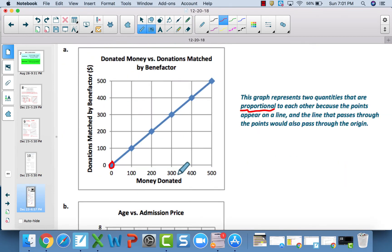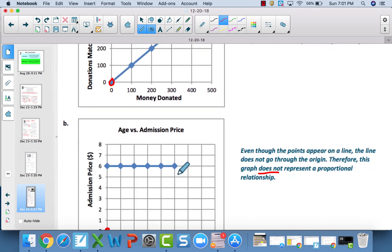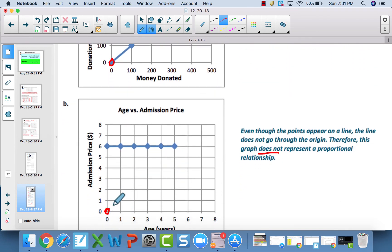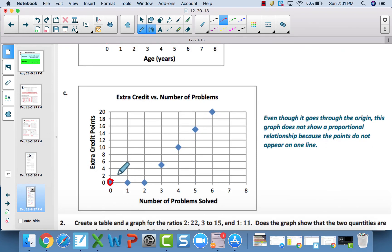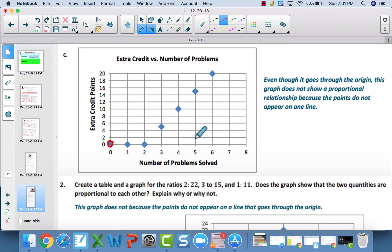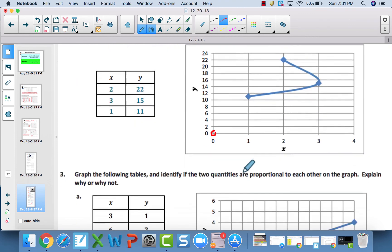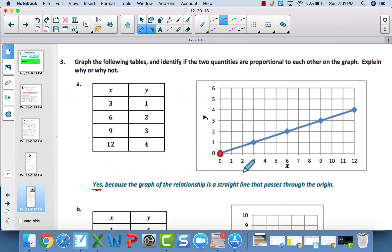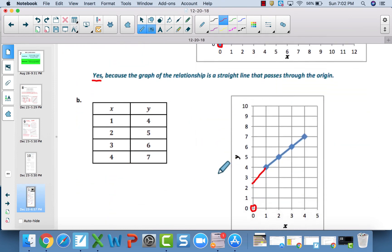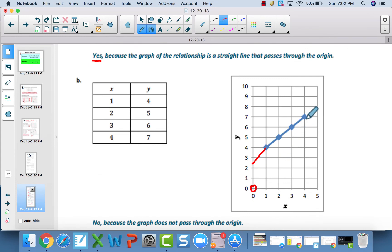Quick run through: 1a is proportional. 1b is not because it does not go through the origin. 1c is not because it does not create a straight line. 2 is not proportional because not only does the line not go through the origin, but it is also not a straight line. 3a is proportional because it has the two criteria—it is a straight line that goes through the origin. 3b is not because the graph does not pass through the origin, even though it is a straight line. That is it for lesson five on proportional relationships and graphing.